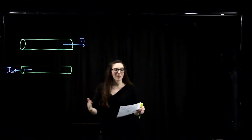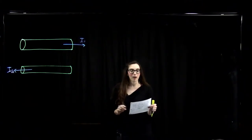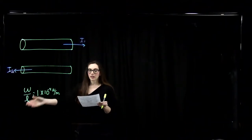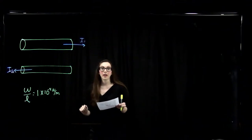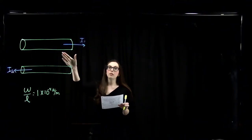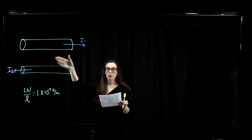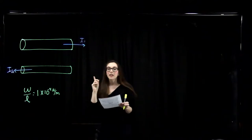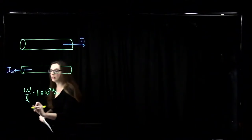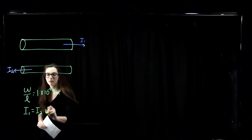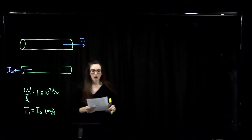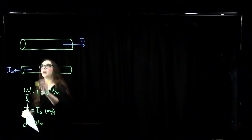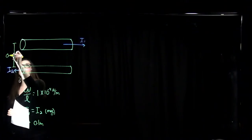In this problem we'll calculate the magnetic force of one current-carrying wire on another parallel wire. We have two wires, each having a weight per unit length of 1×10⁻⁴ N/m. Both wires are parallel and one is directly above the other. The wires carry currents equal in magnitude but opposite in direction, and they're spaced 0.1 meters apart.